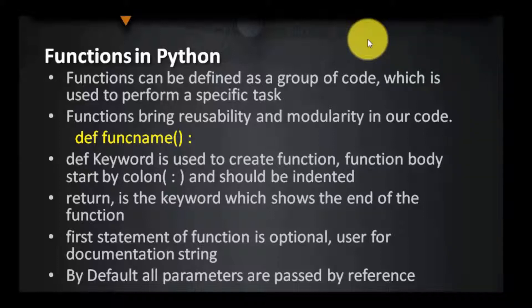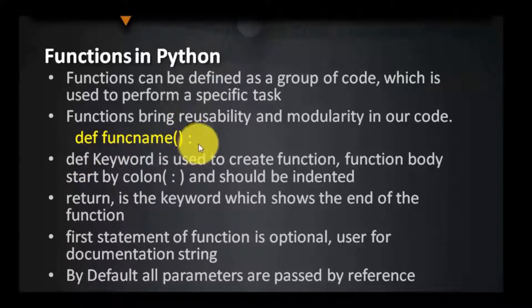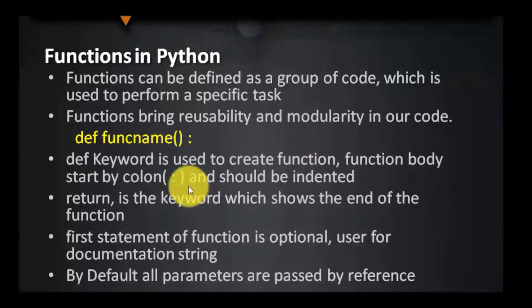Reusability means whenever we want to perform some action — like if I want to perform addition in three different places — I need not write addition code again and again. I just call the addition function. In Python, we can define a function using the 'def' keyword, then the function name, and at the end a colon. The function body starts with the colon.